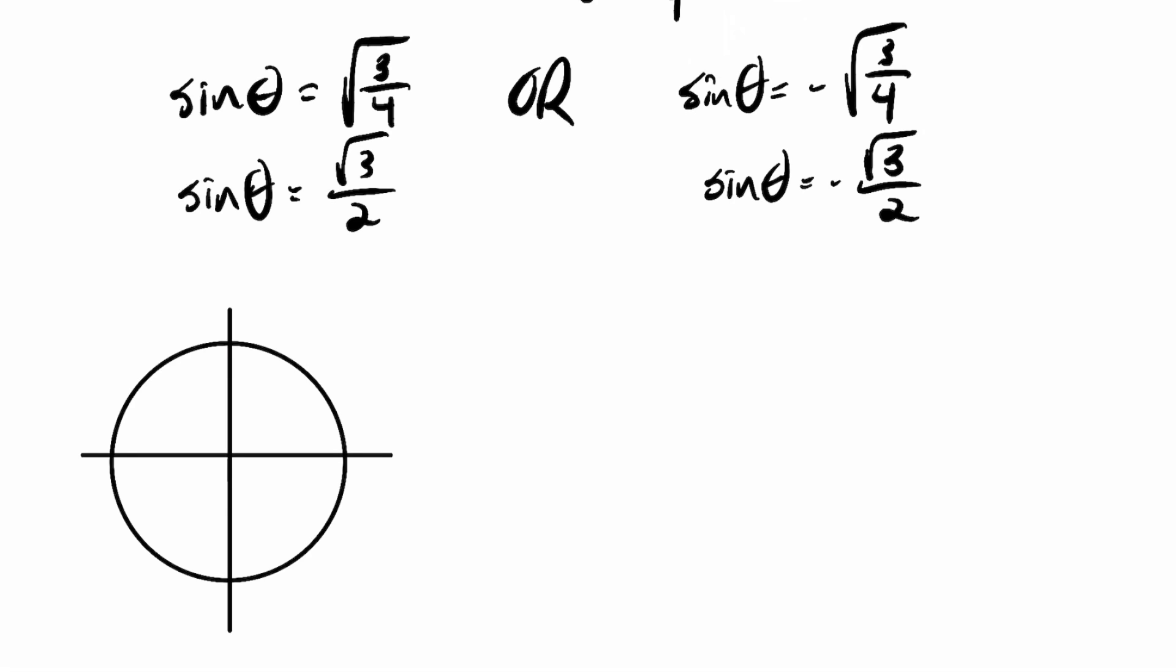Okay, so positive root 3 over 2, assuming this is a unit circle, that's right about there. And then negative root 3 over 2 is about right there. So in quadrants 1 and quadrant 2, I'm going to have those two points on the unit circle. This first one corresponds to the angle pi over 3. You might have remembered that sine of pi over 3 is root 3 over 2. And this one is 2 pi over 3.